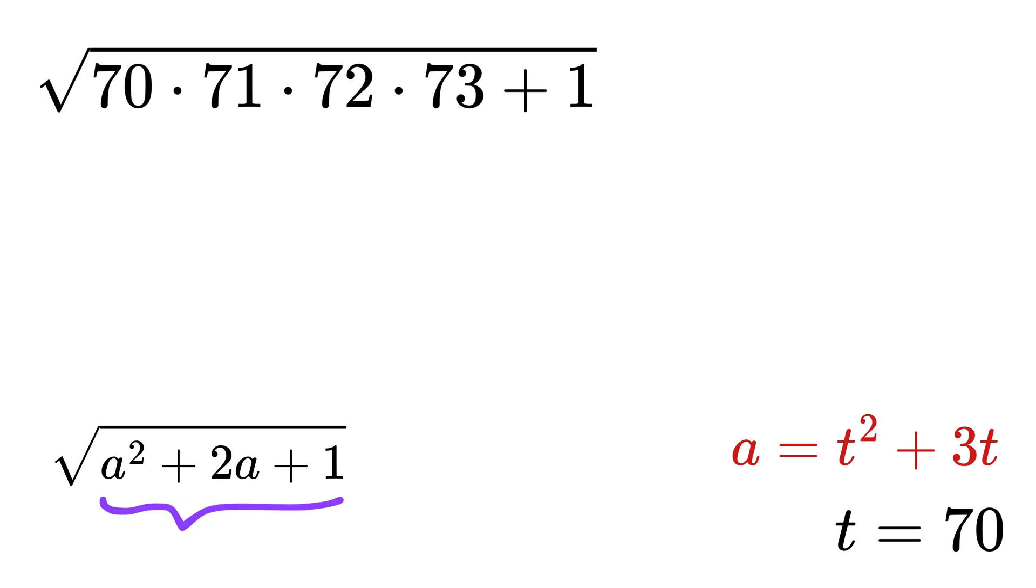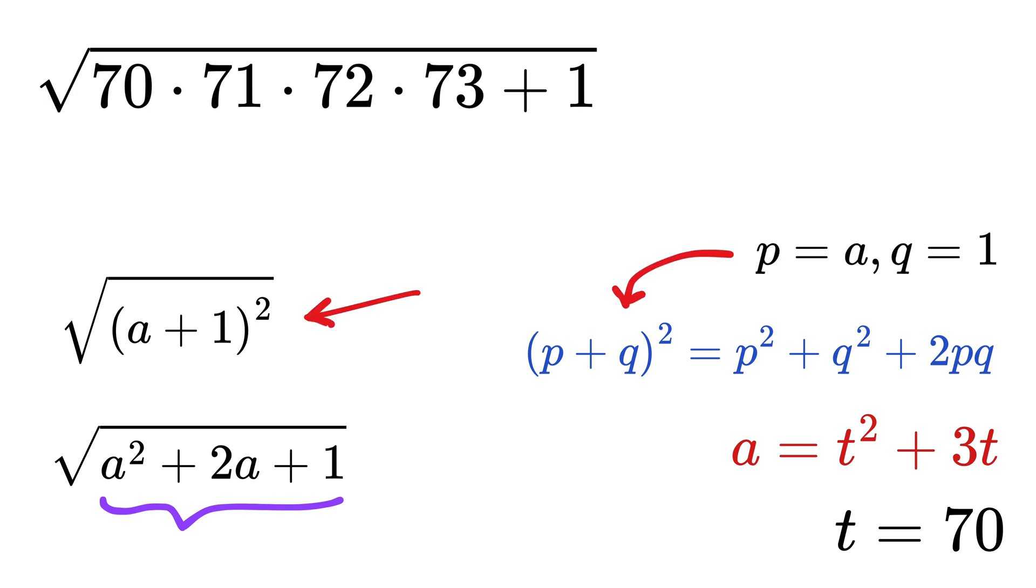But hey, this is just a plus 1 whole squared, because p plus q whole square equals p square plus q square plus 2pq. So if you take p as a and q as 1, we get this identity.